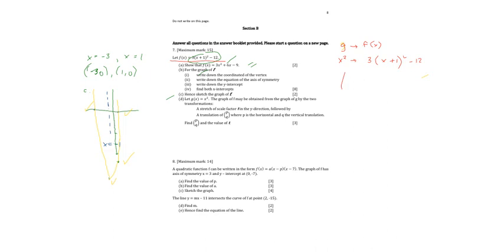And then we are asked to find the values. So for the horizontal translation, our p is the horizontal translation, which is this one. So -1. And our vertical translation is -12.